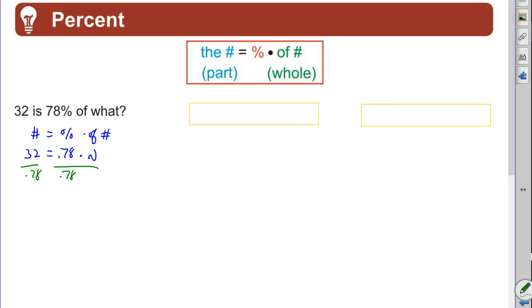And so 32 divided by 0.78 is 41.0. 41.0 equals n. And I always want to ask: does my answer make sense?